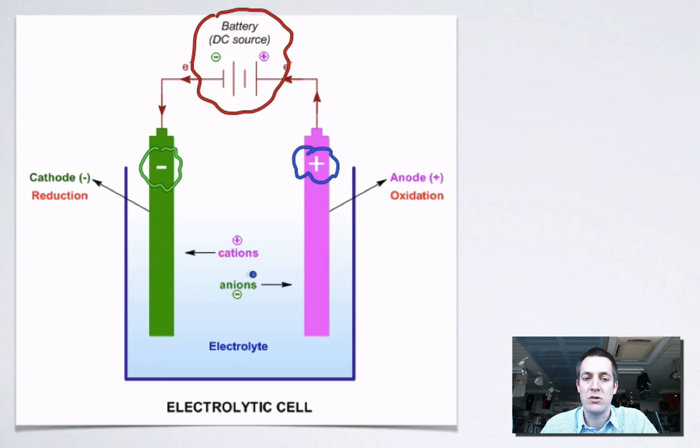The anions, so-called because they head to the anode, they're negative, they're attracted by this positive charge. When they get here, this electrode doesn't have a lot of electrons and so these electrons are stripped from the anions and off they head around the circuit back to the cathode.